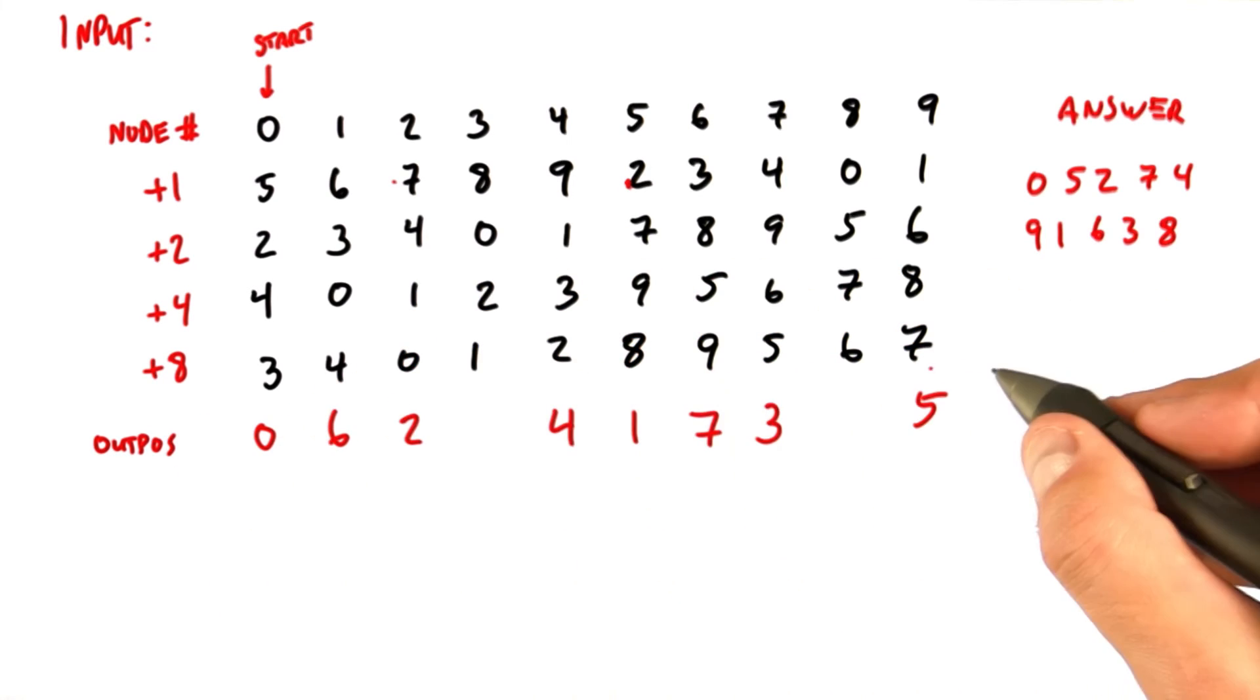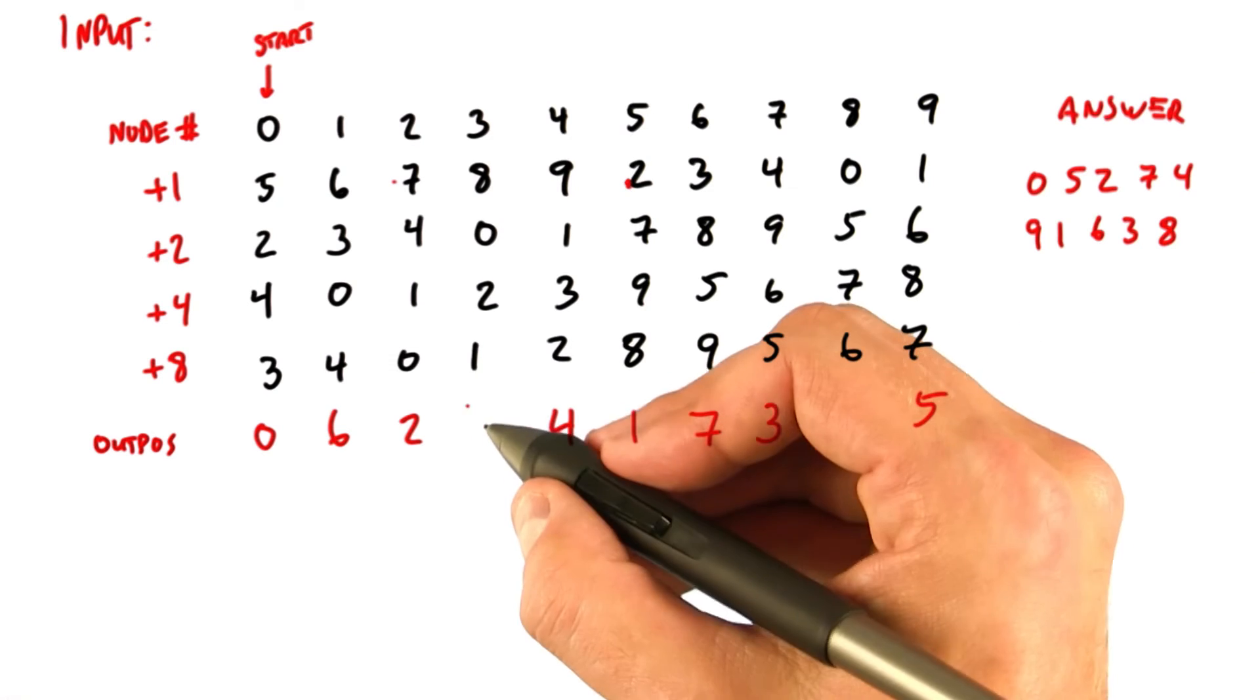And the final iteration, using the plus 8 array, lets us fill in node 3 as outpause 8, and node 8 as outpause 9.